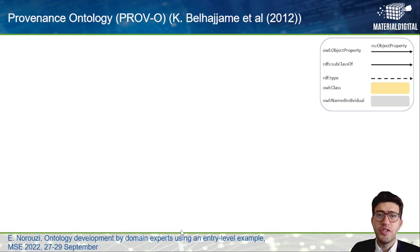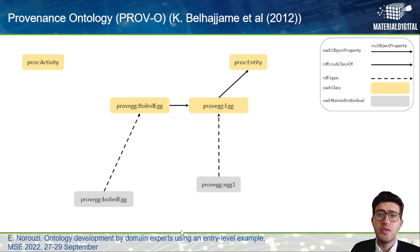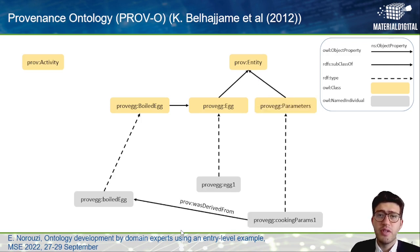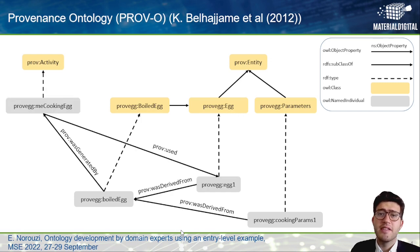The provenance ontology is used in many different domains to represent provenance information. There are two basis classes: PROV Activity and PROV Entity. Here, egg is introduced as a subclass of PROV Entity with some parameters related to it, and 'me cooking an egg' is an instance of PROV Activity which relates to other entities via the object properties of the provenance ontology.